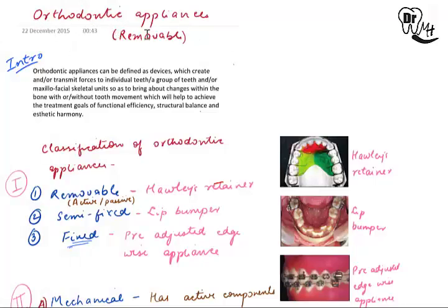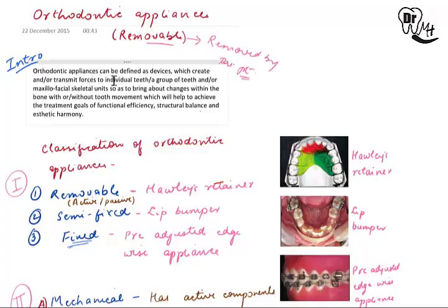Today we will be studying about orthodontic appliances, specifically removable orthodontic appliances. Removable, as the name suggests, means they can be removed by the patient. Orthodontic appliances can be defined as devices which create and/or transmit forces to individual teeth or groups of teeth and/or maxillofacial skeletal units, so as to bring about changes within the bone with or without tooth movement.